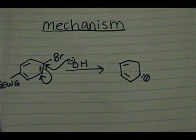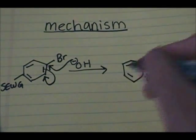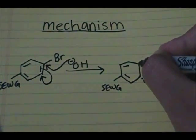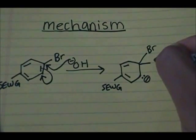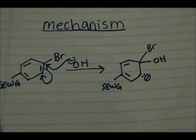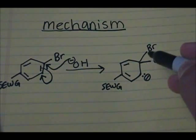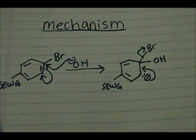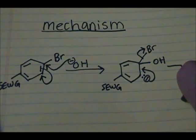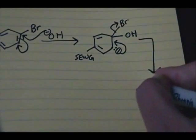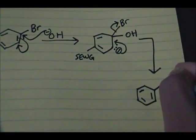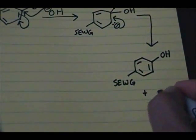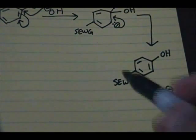So the intermediate you form is a carbanion — a carbon with a negative charge — because the pair of electrons are on that carbon now. You have your strong electron withdrawing group, your bromine which is your leaving group, and your OH. Then you regenerate your double bond and the bromine gets kicked off with that pair of electrons, generating Br⁻.